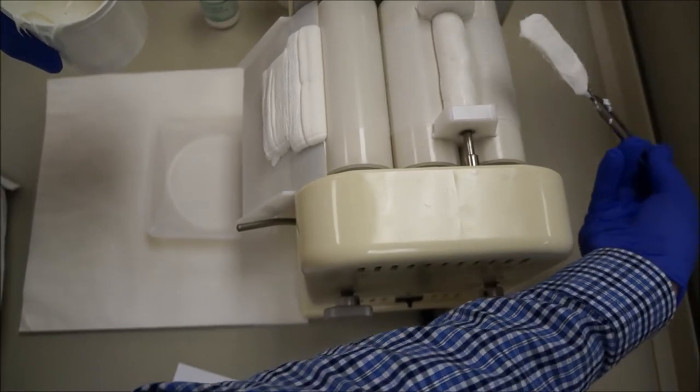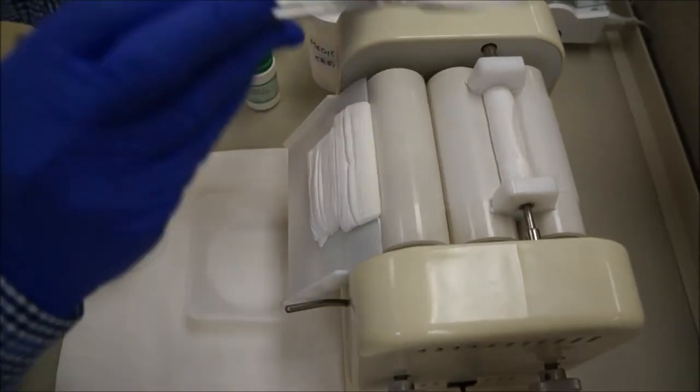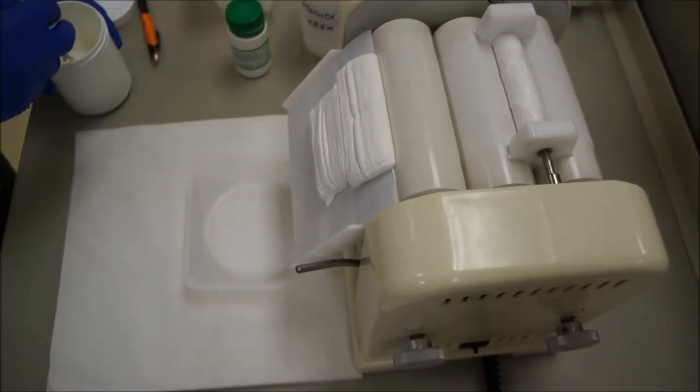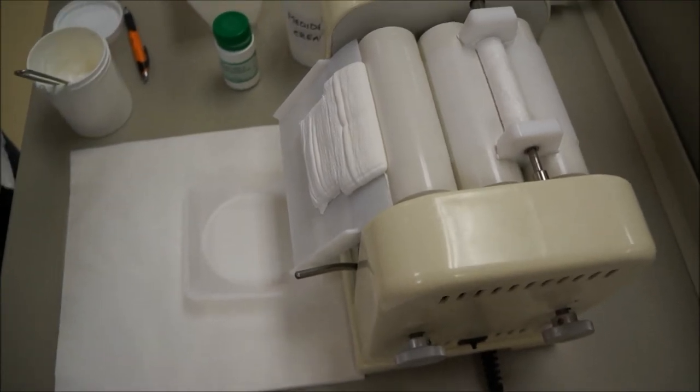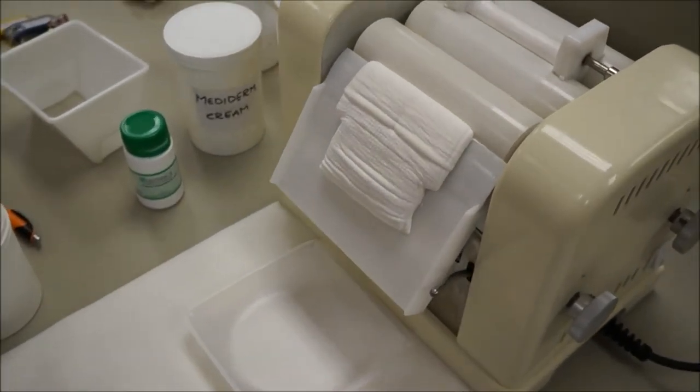As you can see, my spatula has some on it. You scrape it off on that way. You never stick it straight in. You stick it straight in, it will get caught in the rollers and it will ruin your machine, possibly suck your hand in. So you always scrape it off on the back side of the rollers.